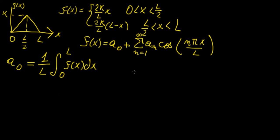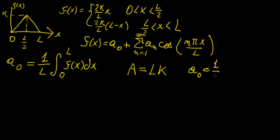Since we have a triangular function, we can use geometry directly. The area of this triangle is base times height, so that's L times k. Since a₀ equals 1/L times the area, a₀ = k. We didn't have to integrate to find that.